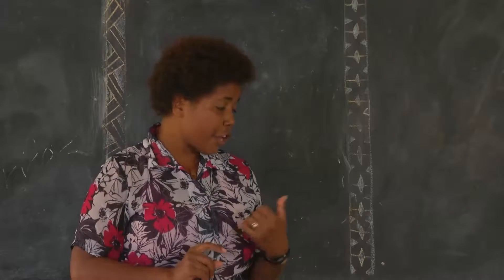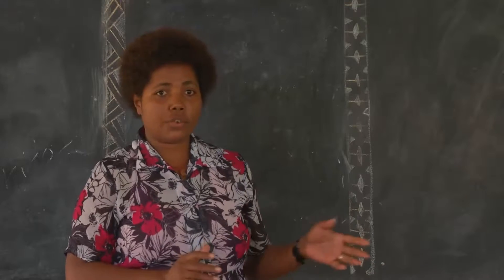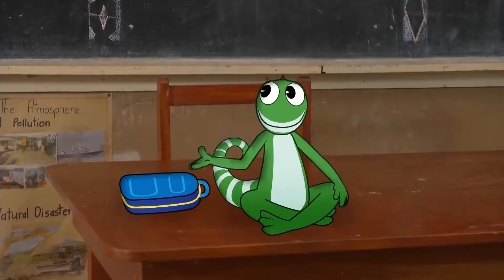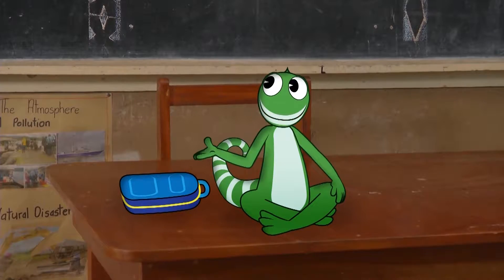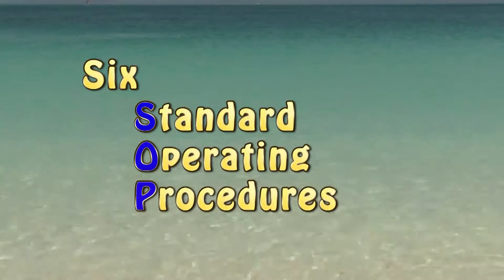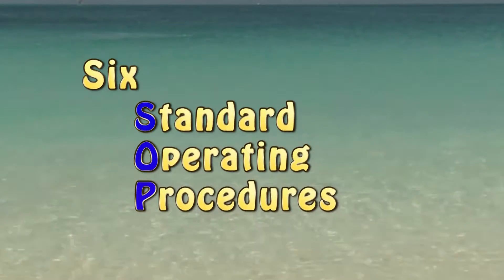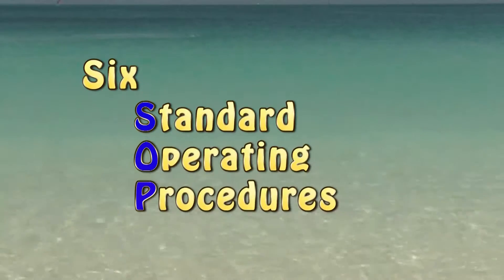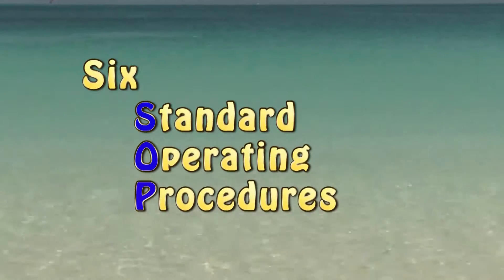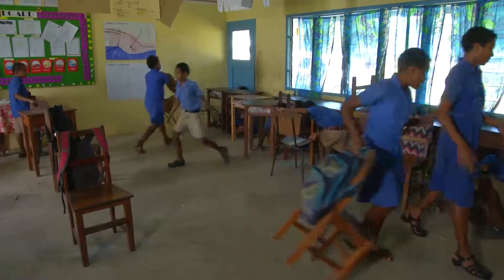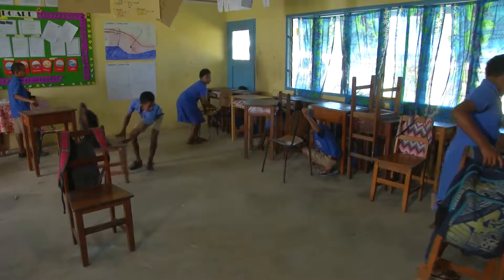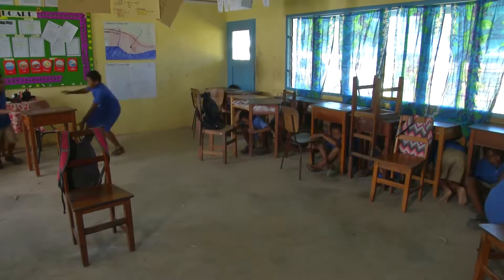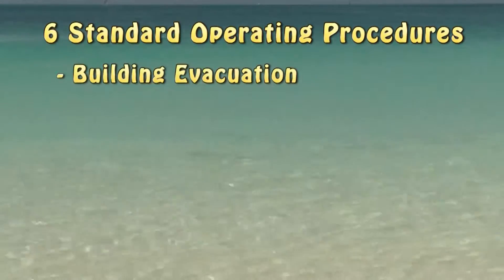Our friend Iggy is going to show us about them. Today we will learn six standard operating procedures that cover almost any situation. These are things that we plan and practice so we can do them easily if we need to.